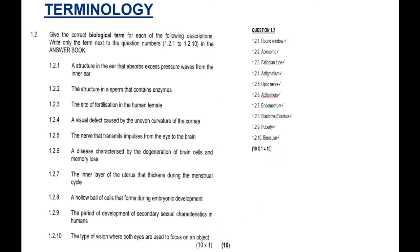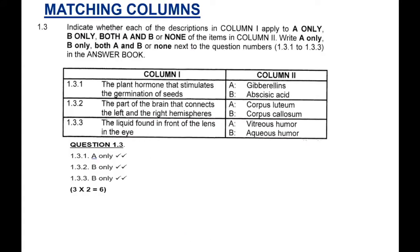Now, let's go and look at the next question. Matching columns 1.3. Indicate whether each of the descriptions in column 1 apply to A only, B only, both A and B or none of the columns in column 2. You must write A only, B only, both A and B or none next to the question number. So, you write your question numbers and then you answer appropriately. Now, let's look at 1.3.1. The plant hormone that stimulates the germination of seeds. Now, we know the germination of seeds is caused by gibberellin. So, your answer should be A only.